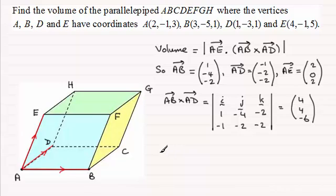Now all we need to do then is just dot that with AE and that will give us the volume. So therefore the volume is going to be equal to the magnitude then of the dot product between AE which is (2, 0, 2) dotted with the cross product vector (4, 4, -6).